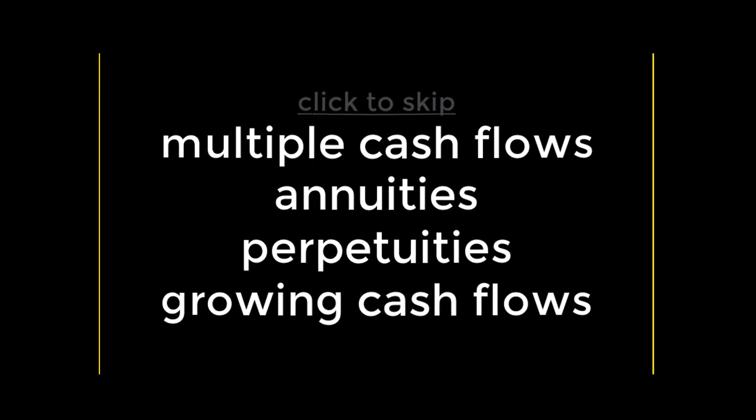First, we'll revisit Future Value and Present Value to develop an intuition of what happens to each when we have multiple cash flows. Second, we'll get familiar with annuities, which are a common type of cash flow pattern we'll encounter. Third, we'll explore perpetuities, which are closely related to annuities. Finally, to top it all off, we'll talk about growing annuities and perpetuities.